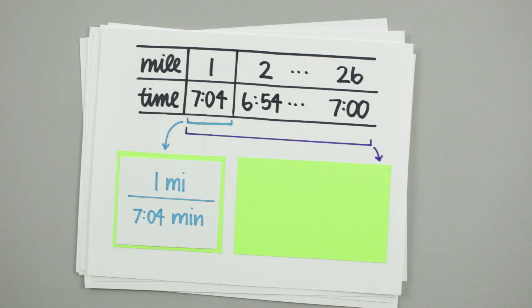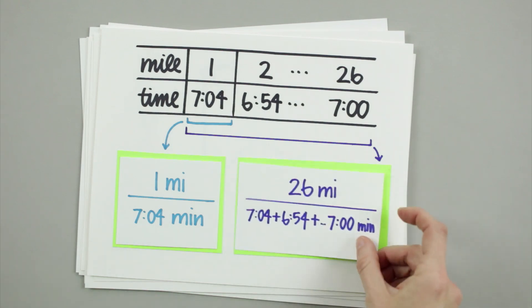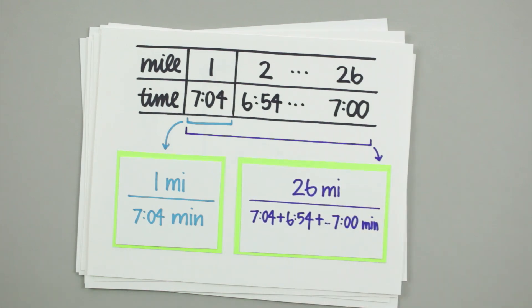But if we wanted to find her average speed over the course of the race, we would need the total change in distance, 26.2 miles, over the total time elapsed.